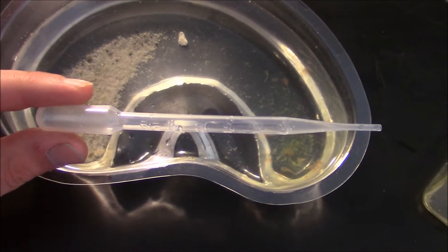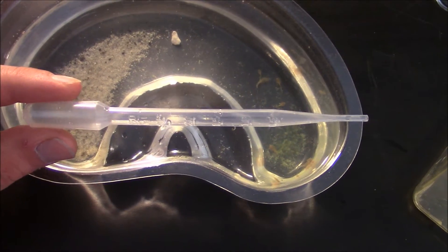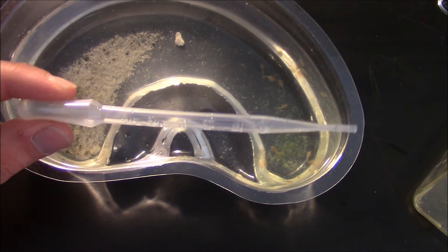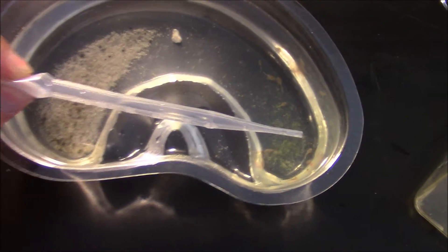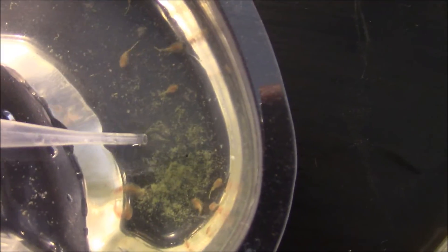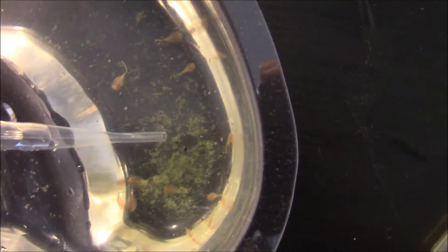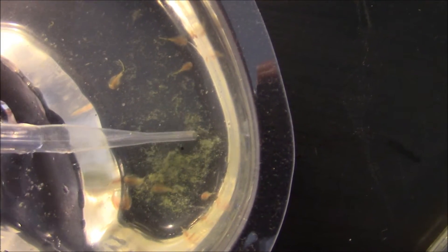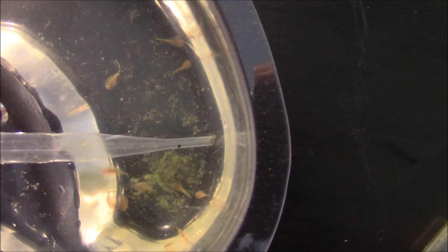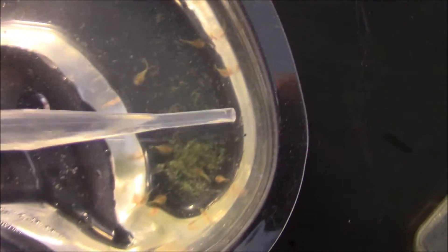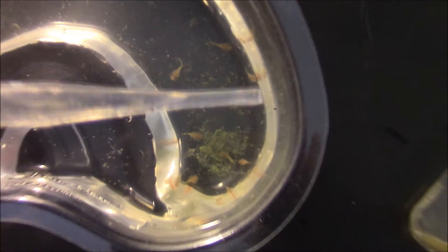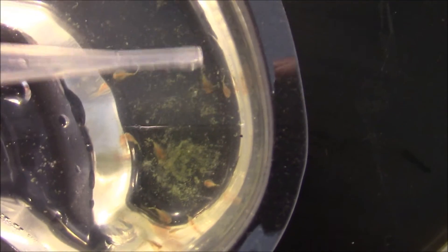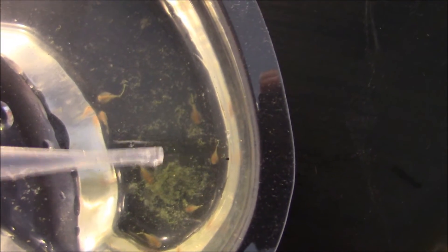This is what the pipette looks like. All you're going to have to do is depress it here and then suck up some of the old food, being careful not to suck up any triops. When you have the old food in there, just place it into a container and repeat this process until you've removed all of the leftover food and poop.